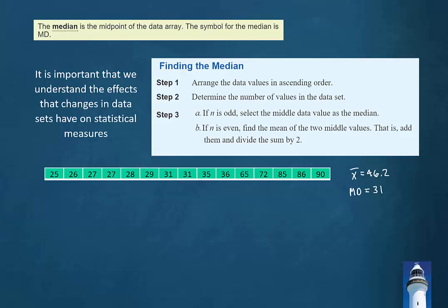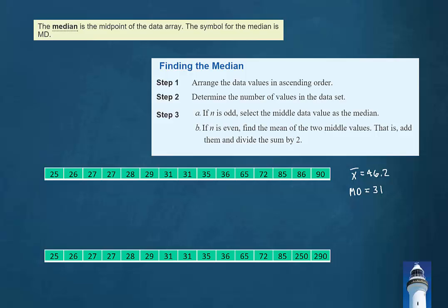It is important that we understand the effects that changes in data sets have on statistical measures. Here we have another data set that matches the first all the way up to the last two values. Notice that the two largest values in the first set have been removed, and two extreme values relative to the others have been added in.